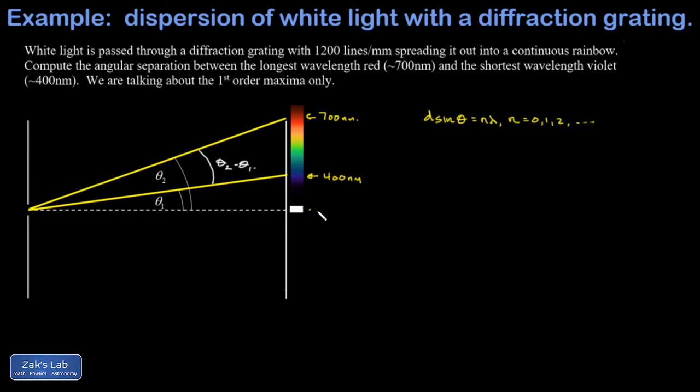0 for every wavelength of light, so they all interfere constructively along the center line and I still have a mix of all the colors so I see a white spot there. What I'm interested in is the first order maximum off the center line, and that corresponds to n equals 1.